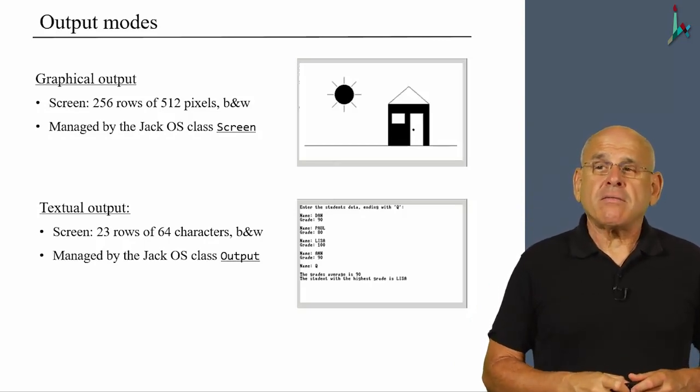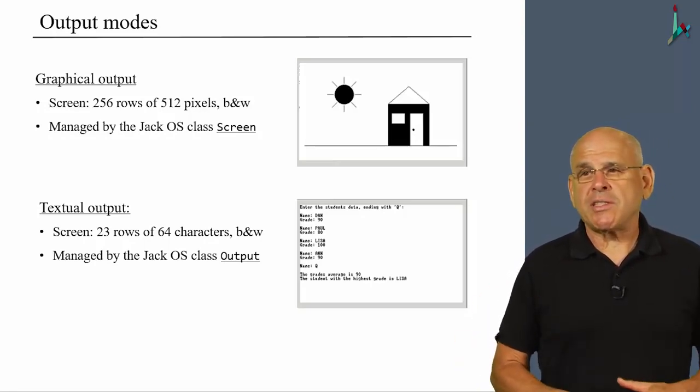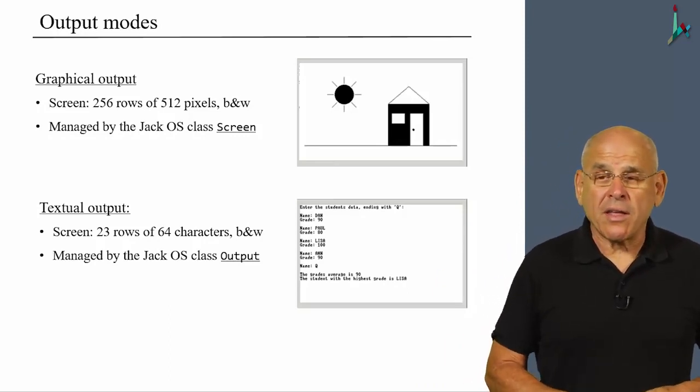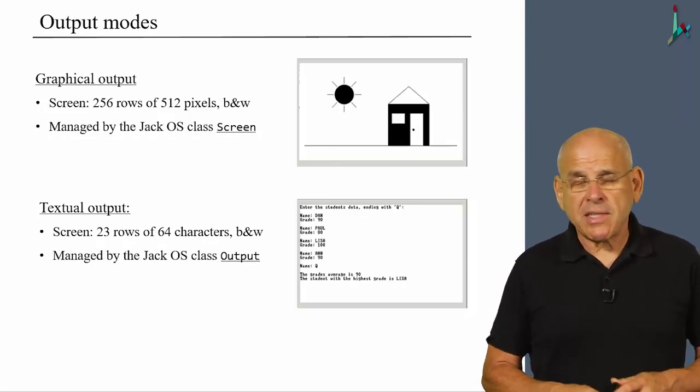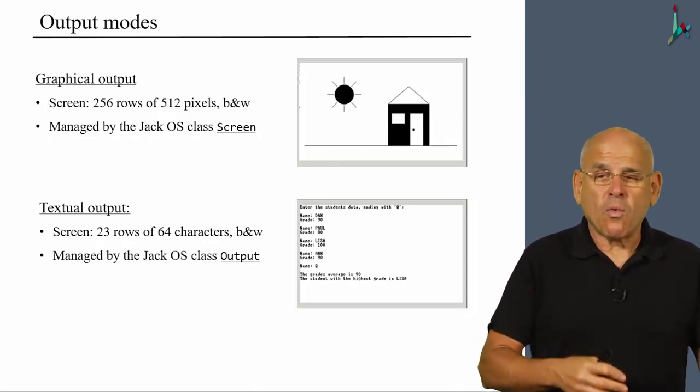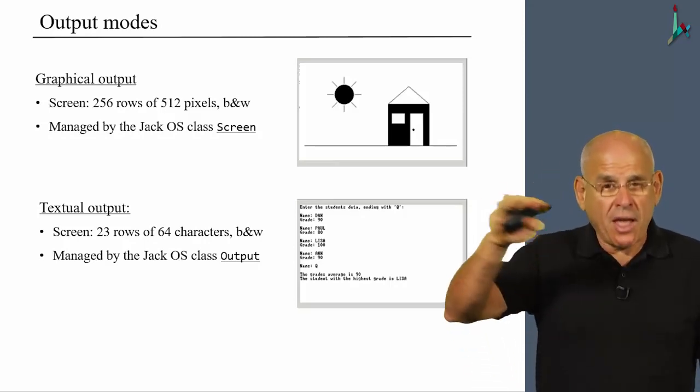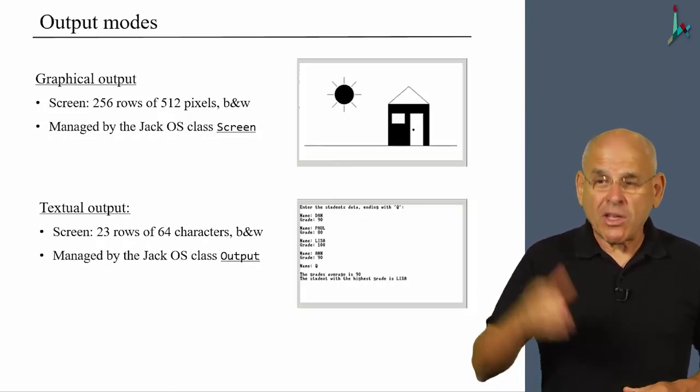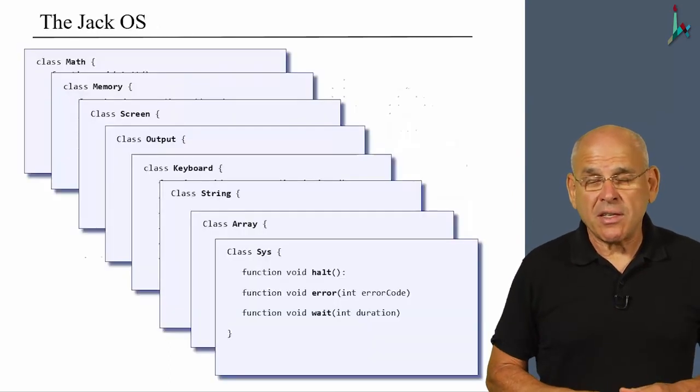Now, notice that just like the screen class implements such abstractions as circle and rectangle drawing, well, in a very similar fashion, the output class implements such abstractions as drawing the letters K, Q, 1, 7, and so on. The letter K or the image K is just an abstraction. Someone has to work hard in order to actually draw this image on the screen. And that's what this unit is all about.